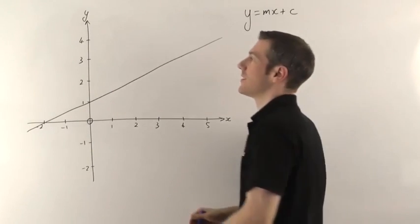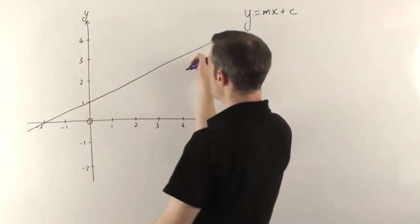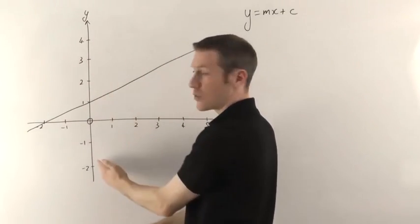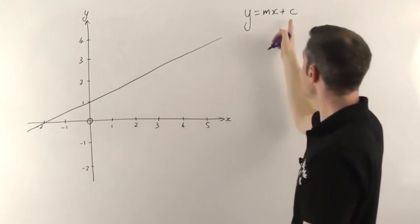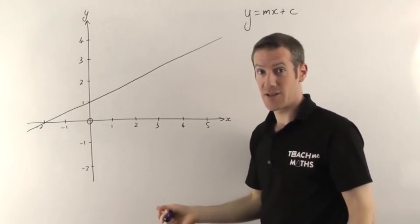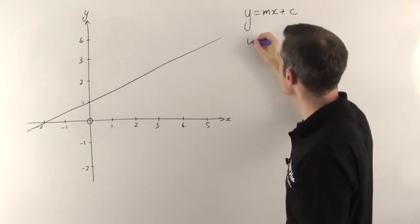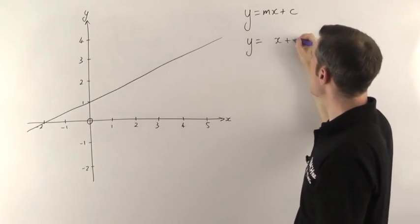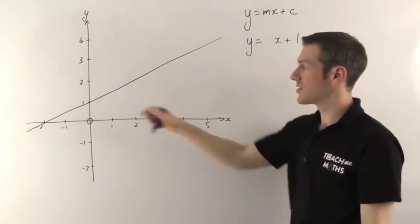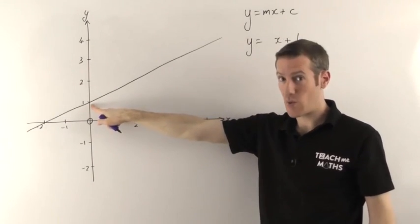Now the y-intercept is the easiest one. You just look to see where the straight line crosses the y-axis, and it crosses at 1. So the y-intercept straight away is going to be 1. So our equation is going to be y equals something times x—we're not quite sure what the gradient is yet—but it's going to have a plus 1 on the end because it crosses the y-axis at 1.